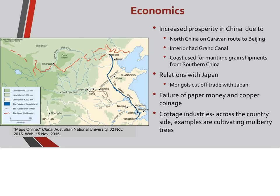For economics, there was increased prosperity in China due to north China being on the caravan route to Beijing. The interior had the Grand Canal, which connects the southern Yangtze River up to the Yellow River. This was important because the south was the rice-growing region and the north was the millet and wheat region. The north could now send millet and wheat south, and the south could send rice north. Importantly, they received a new fast-ripening strain of rice from Champa in Vietnam, which allowed a tremendous increase in population, specifically for the peasantry.